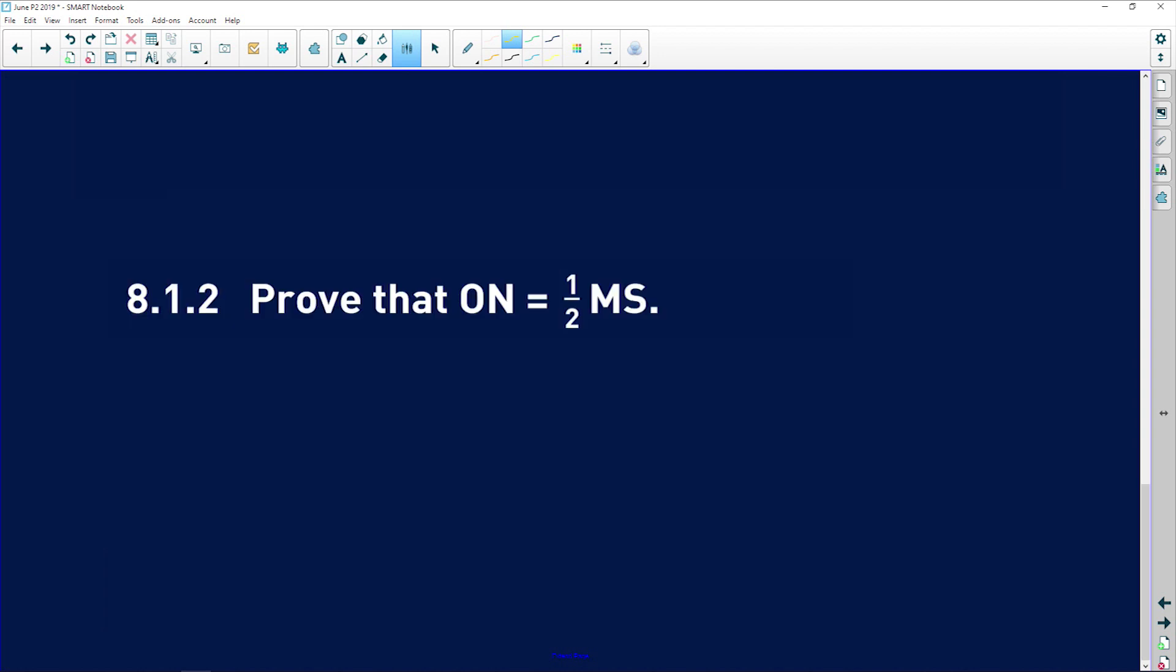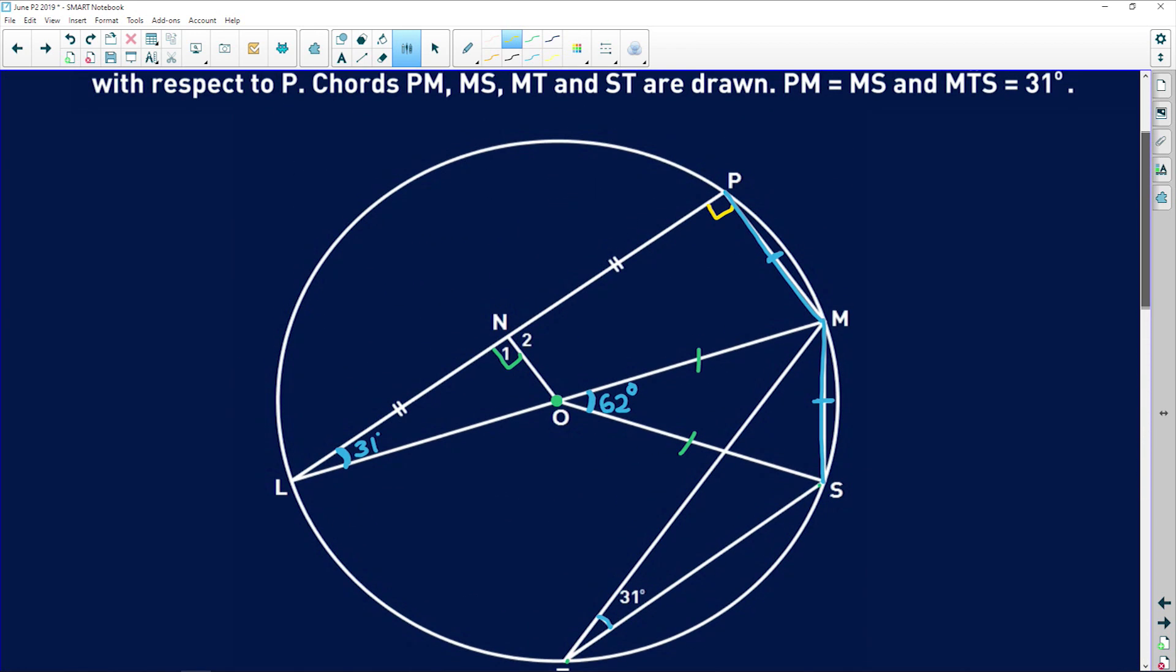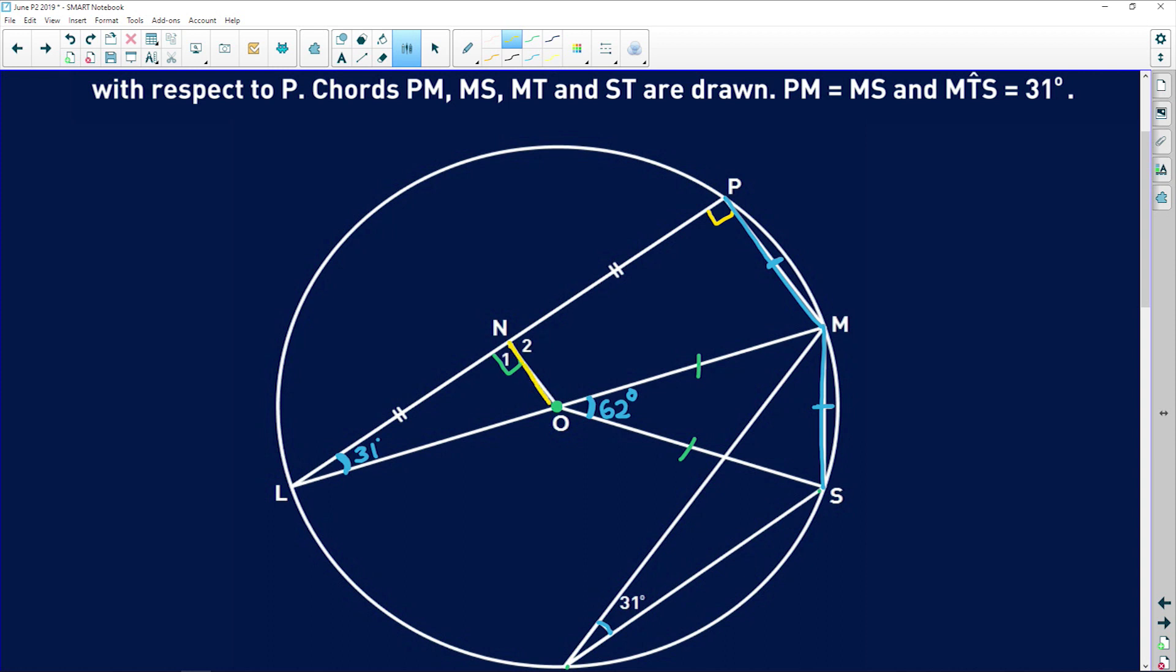8.1.2 says prove that the line ON is equal to half the length of MS. So ON is this line here. And MS is that line there. But remember, MS is equal to PM. So if we can prove that ON is equal to half PM, which seems a lot more simple because it's in the same triangle, we can prove that it's equal to MS.